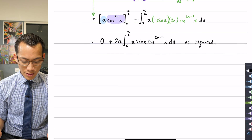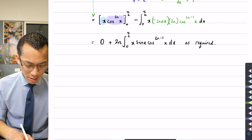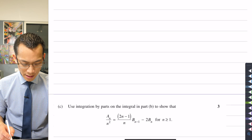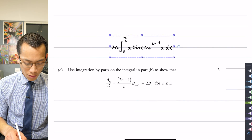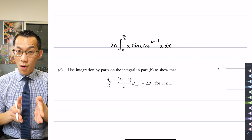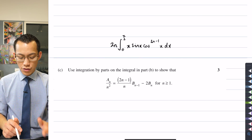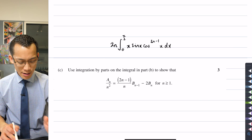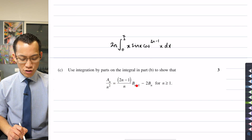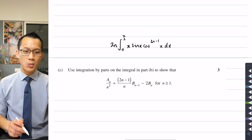Here is the integral from Part B right here, and I might just duplicate that because we want to keep it in view. Use integration by parts on that in order to show the result, and then we've got the first introduction of the B_N term. So there's B_N and there's B_{N-1}.